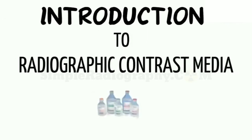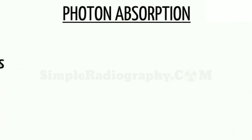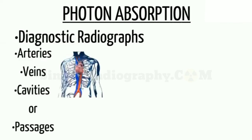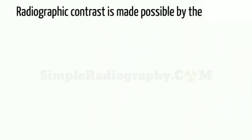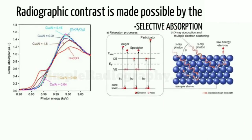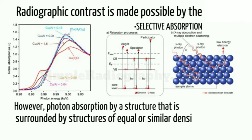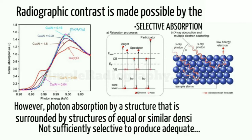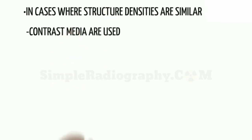Introduction to radiographic contrast media, part 1: photon absorption. It would be difficult, if not impossible, to produce diagnostic radiographs of arteries, veins, cavities, or passages without special contrast media. Radiographic contrast is made possible by the selective absorption of x-ray photons. However, photon absorption by a structure surrounded by structures of equal or similar densities is not sufficiently selective to produce adequate radiographic contrast.